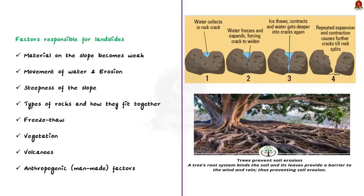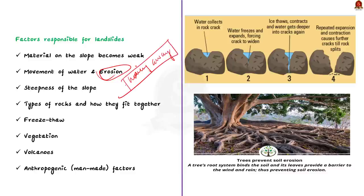There are many reasons for landslides. Firstly, when the material on a slope becomes weak — just like a sandcastle that doesn't hold its shape when sand gets too wet or loose, the same can happen to rocks and soil on a slope. The second factor is water: when water gets into the ground and makes it soggy, it adds weight and makes the slope weak. Erosion is another factor — if a river or sea keeps wearing away the bottom of a slope, it eventually becomes too steep and can't hold itself up, causing a landslide. The steepness of the slope itself is also important.